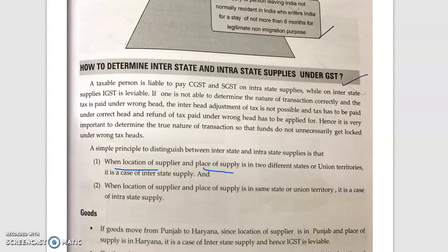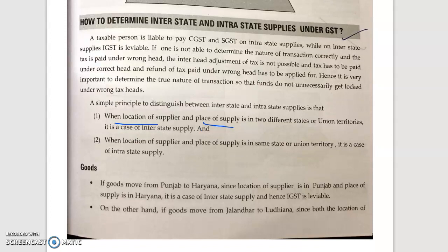The next topic is how to determine interstate and intrastate supplies. This is the most important thing — you have to correctly determine the nature of supply. If you determine it wrongly, you will have paid GST under the wrong head. You will have to pay the correct head of GST, and for the wrong head you already paid, you will have to claim a refund.